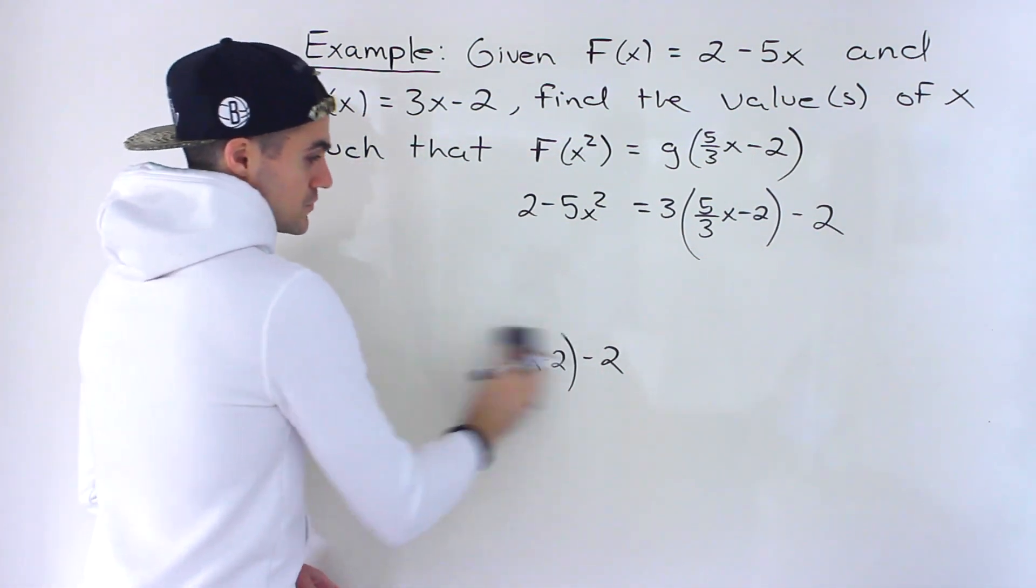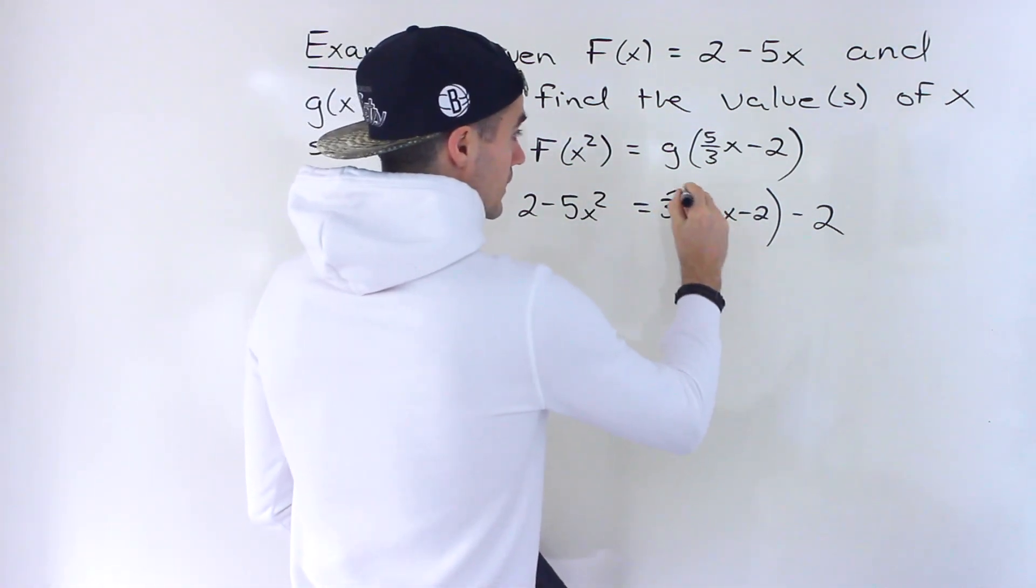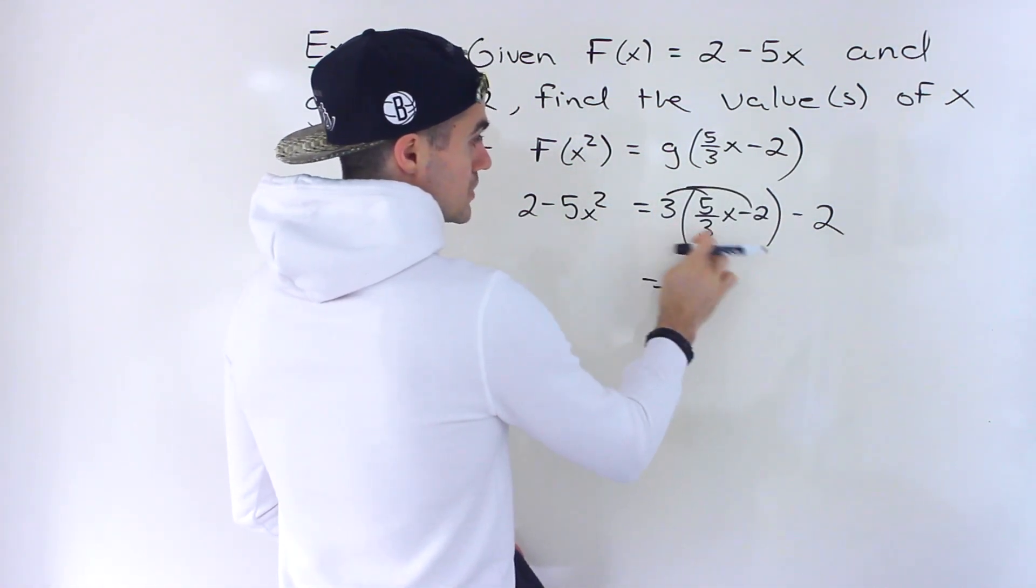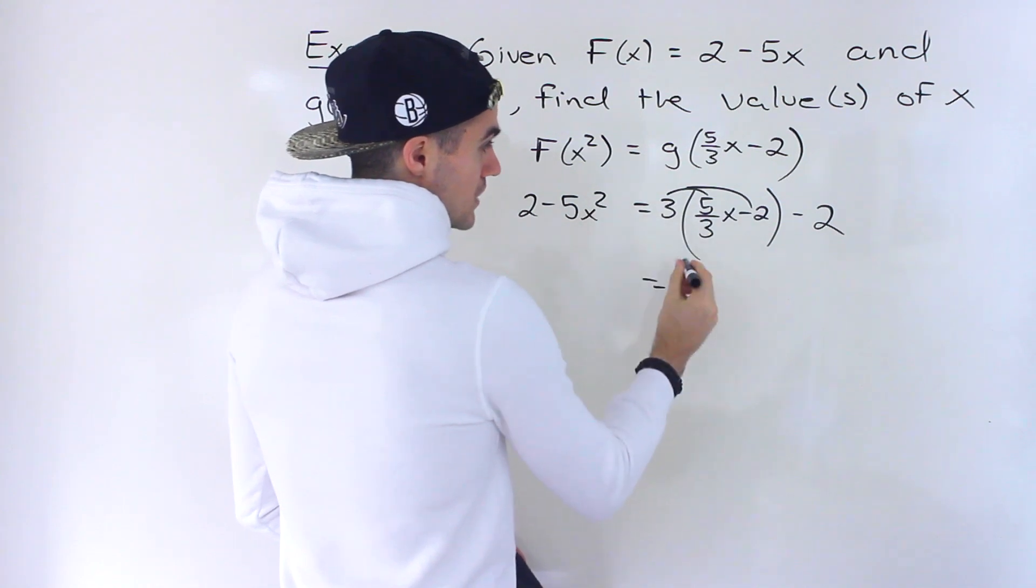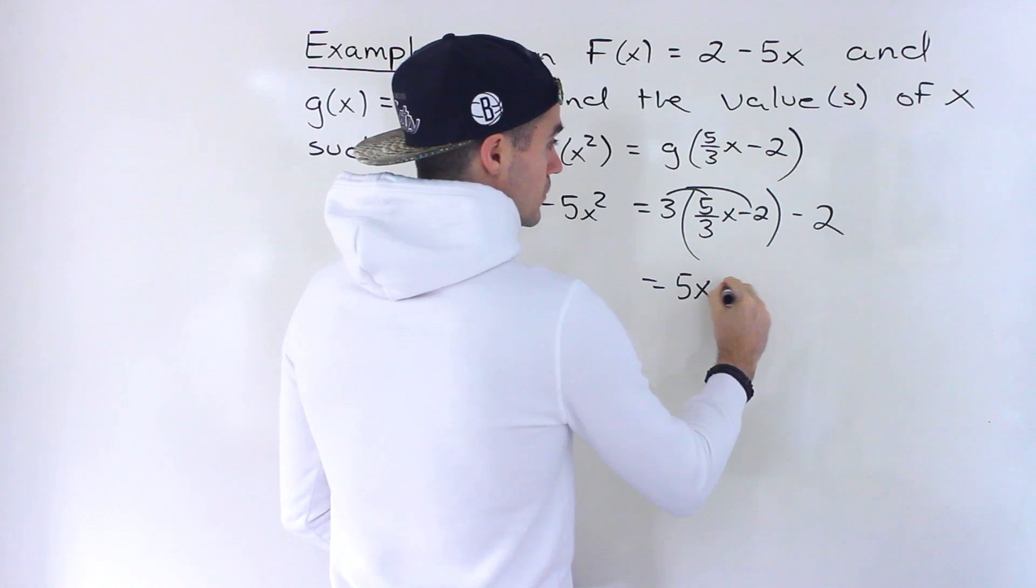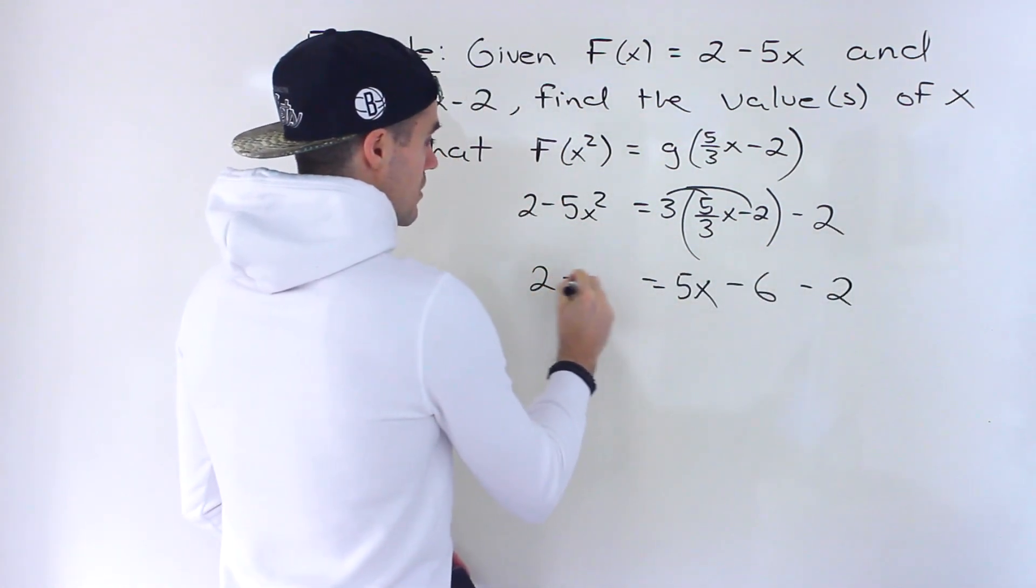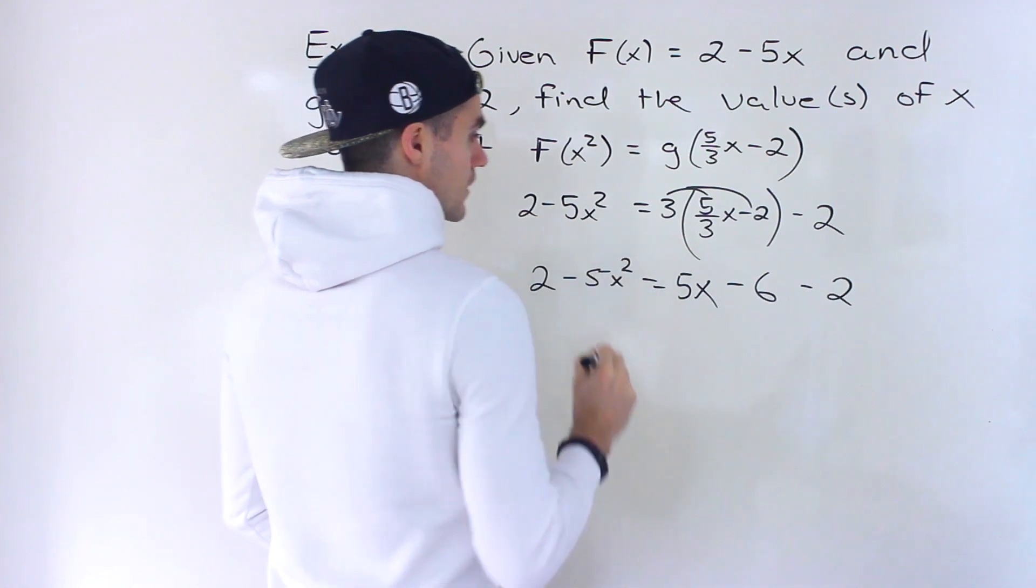And then from here, it's just an equation—we just have to solve for x. So notice here we've got to distribute. What's 3 times 5 over 3? Notice the 3's would cancel, so we would just be left with 5x there. And then 3 times negative 2 would be minus 6. Then we'll have the minus 2 over here. This left side will stay the same.